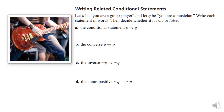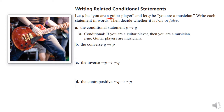We're going to write related conditional statements and decide if they're true or false. Let P be "you are a guitar player" and let Q be "you are a musician." The conditional statement is: if you are a guitar player, then you are a musician. That is true, because if you can play the guitar, you're a musician — whether you're good or bad.